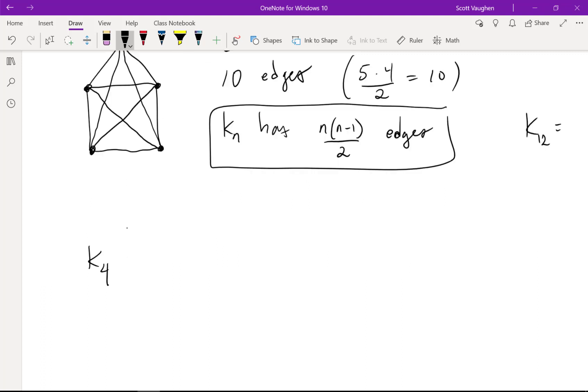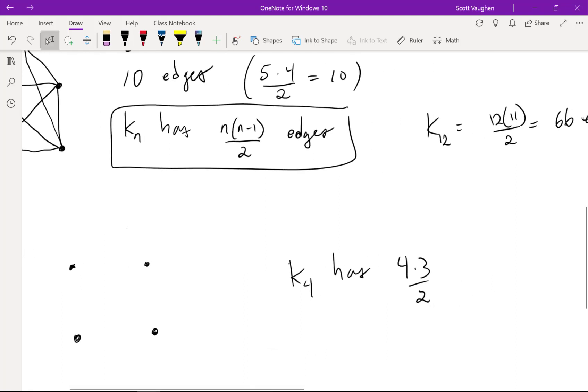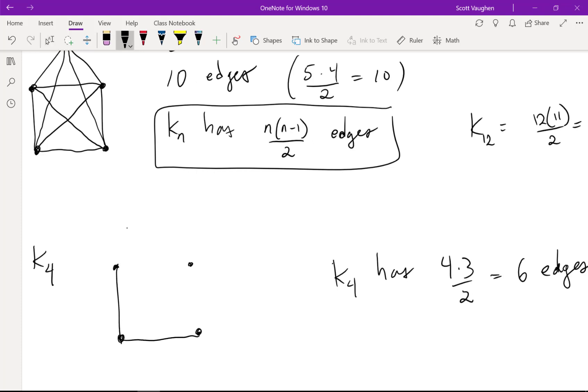How about K4? Four vertices. Four times three over two. That's six edges. Yeah, that makes sense. One, two, three, four, five, and six.